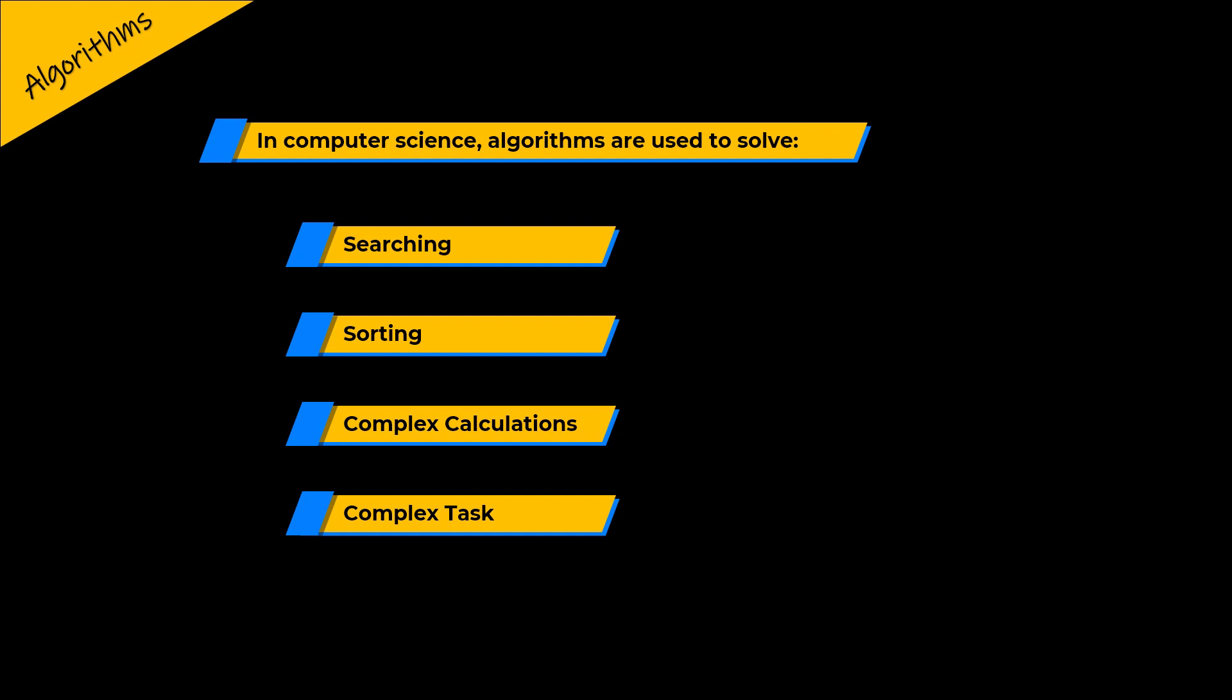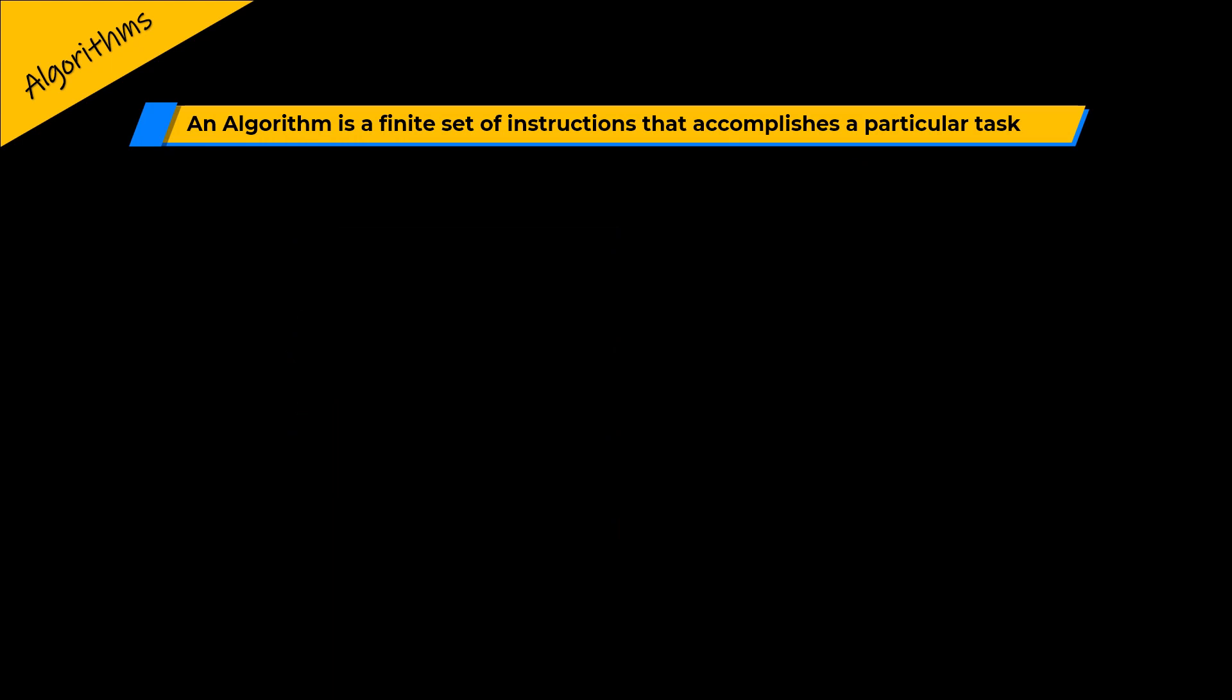Having said that, let us look at the definition of an algorithm. An algorithm is a finite set of instructions that accomplishes a particular task and must satisfy the following criteria.